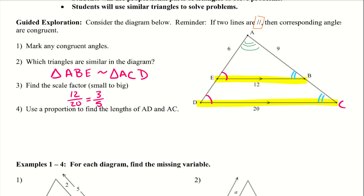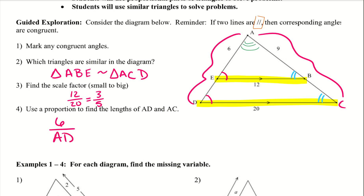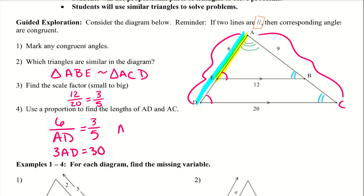Use a proportion to find the lengths of AD and AC. So AD is here. I can do 6 over AD — if I have 6 for the smaller triangle side and AD is the entire side of the larger triangle — and then set that equal to 3 over 5, because that is my scale factor. So 3·AD equals 30, so AD equals 10. That entire side here equals 10.